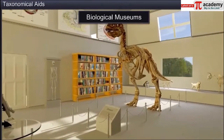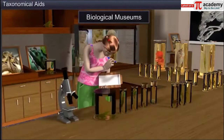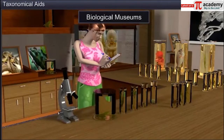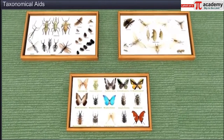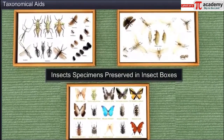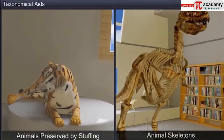Biological museums set up in educational institutions also act as taxonomical aids. These museums have collections of preserved plants and animals which are used for study and reference. They are preserved in jars using preservative solutions or as dry specimens. Insects are collected, killed, pinned and then preserved in insect boxes. Larger animals are typically stuffed and preserved or their skeletons are displayed.